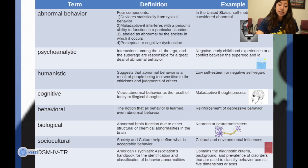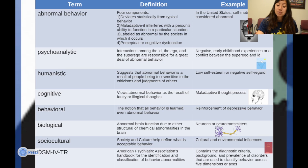The behavioral view is the notion that all behavior is learned, even abnormal behavior — for example, the reinforcement of depressive behavior. The biological view holds that abnormal brain function is due to either structural or chemical abnormalities in the brain. Keep in mind that these are all different views of abnormal psychology.